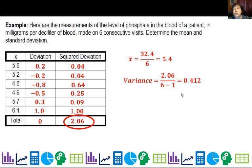And then usually we like the standard deviation. That's our big measure. We'll just take the square root of that and get 0.642.